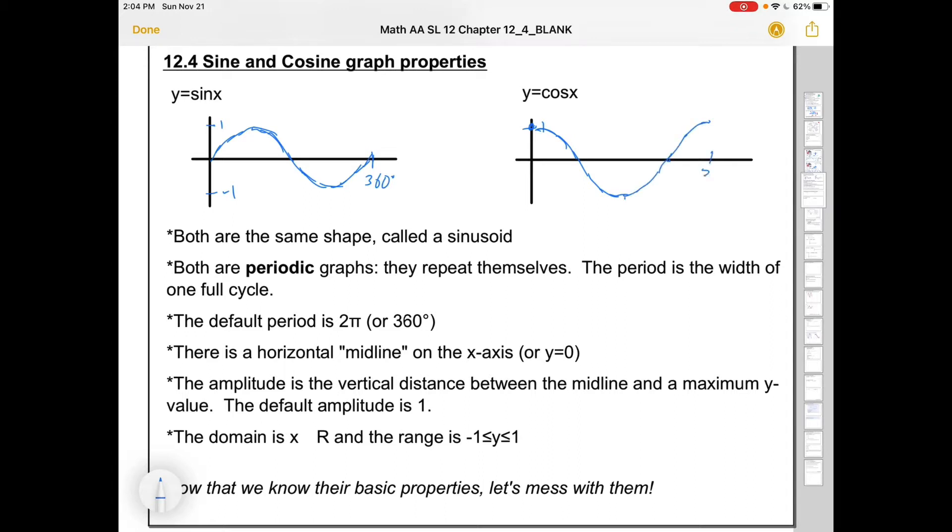And again, it would take 360 degrees to complete that full cycle and go back to where it started. Now if we do this in radians, let's think about that. 360 degrees is 2 180s, or 2π. So 2π to complete a full cycle. On the sine graph, that would mean halfway through the cycle, at π, we're on the x-axis. π/2, we're at a max. And at 3π/2, we're at a min, because 3/2 is halfway in between 1 and 2.